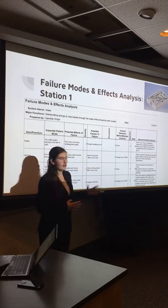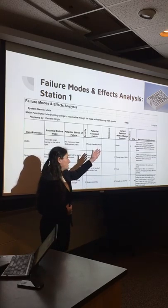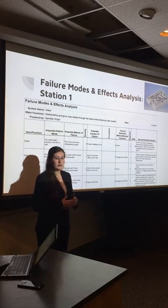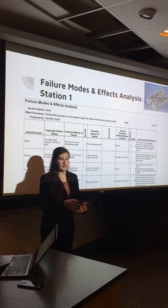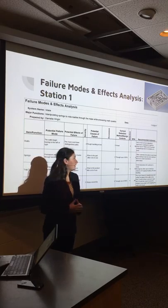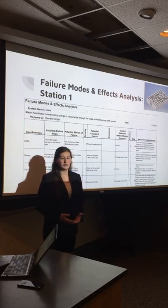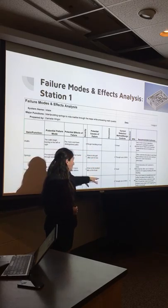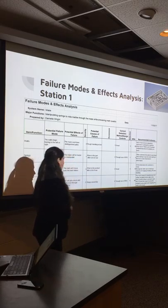For station one, the FMEA chart shows all the main failures that could occur with our maze design. Our team found that the main problem is the hot glue. If it's laid on too thick on the bottom, the marble will not be able to roll through the maze and the student cannot successfully complete station one. A way to fix this is to pay more attention to manufacturers so that the hot glue is laid the correct amount onto the wall to secure it onto the base, which will decrease the occurrence and lower the RPN of the hot glue failure.